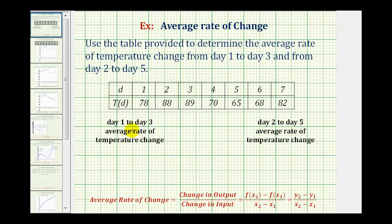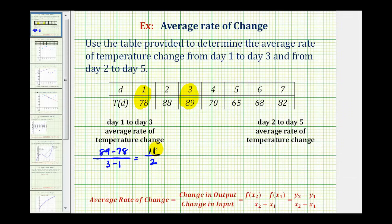Now let's find the average rate of temperature change from day one to day three. We'll start by determining the change in the temperature, which would be 89 minus 78, divided by the change in days, which would be three minus one. 89 minus 78 is equal to 11, and three minus one is equal to two. The rate of change in this form represents an 11 degree increase over the two days.